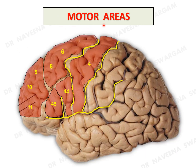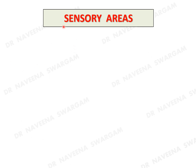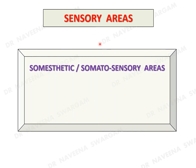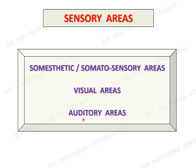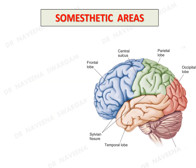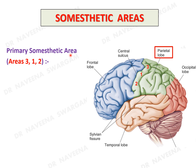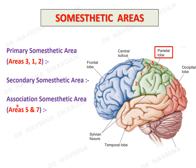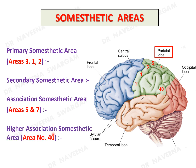That covers the motor areas on the frontal lobe. Now for sensory areas, they are divided into somesthetic or somatosensory areas, visual areas, and auditory areas. Somesthetic areas occupy the parietal lobe and are subdivided into primary somesthetic area (areas 3, 1, 2), secondary somesthetic area, association somesthetic area (areas 5 and 7), and higher association somesthetic area (area 40).